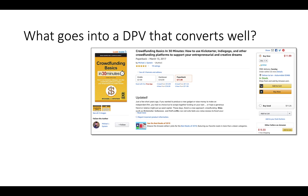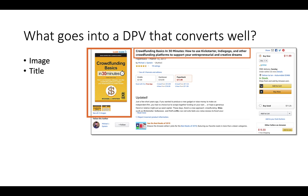So what goes into a detail page that converts well for a book? Here is one of the books my company publishes — Crowdfunding Basics in 30 Minutes by Michael J. Epstein — and here is the basic listing. It has three different versions, ratings, title, and buying information. First, it has a professional image. People on Amazon do judge books by their cover, and you want a professional-looking image. The title is a little long, partly to help people find it among many crowdfunding books, and to let people know what the book is about.